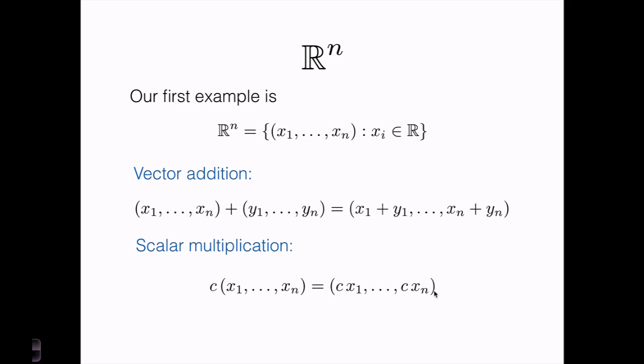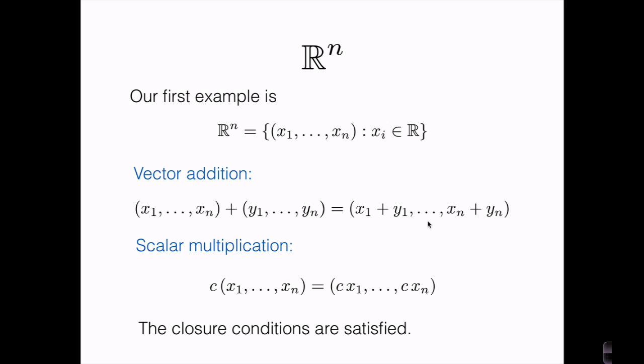So now we have our set — the set of all n-tuples of real numbers — and we've defined addition and multiplication. Let's go through and check that this satisfies the conditions for a vector space. First, let us see that the closure conditions are satisfied. If we take the sum of any two vectors in R^n, the result is again just an n-tuple of real numbers, so it's in R^n. The same holds for scalar multiplication: c times x is again an n-tuple of real numbers, so it's also in R^n.